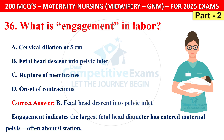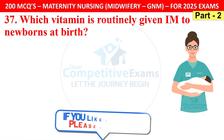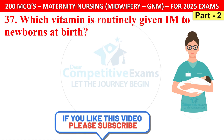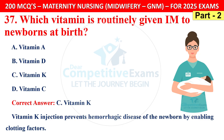Question 37: Which vitamin is routinely given IM to newborns at birth? Options are vitamin A, D, K, or C. The correct answer is C — vitamin K. Vitamin K injection prevents hemorrhagic disease of the newborn by enabling clotting factors.